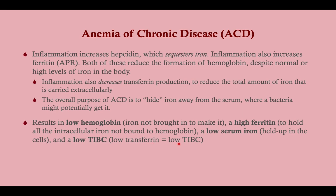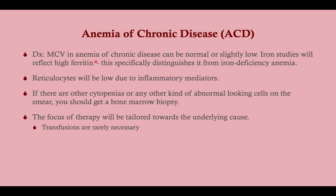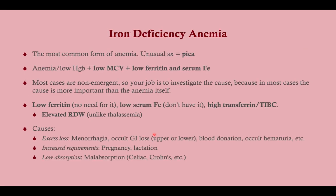In anemia of chronic disease, you have a high ferritin to hold the intracellular iron not bound to hemoglobin, a low serum iron because it's held up in cells, and a low TIBC due to reduced transferrin. Diagnosis is by iron studies; reticulocytes will be low due to inflammatory mediators. If other cytopenias are present, get a bone marrow biopsy — that patient may have a hematologic malignancy or aplastic anemia. Therapy focuses on treating the underlying cause; transfusions are rarely necessary.